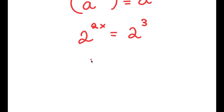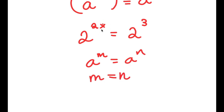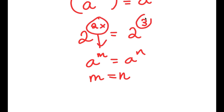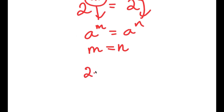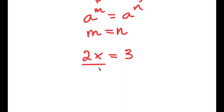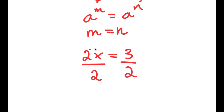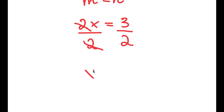Now, if I have something in the form a to the power of m is equal to a to the power of n, this means that m is equal to n. So in this case, 2x is equal to m and 3 is n, giving me 2x is equal to 3. This is a simple equation — all I have to do is divide both sides by 2. These two cancel out and I get x is equal to 3 over 2.